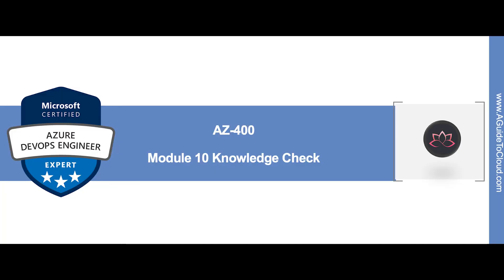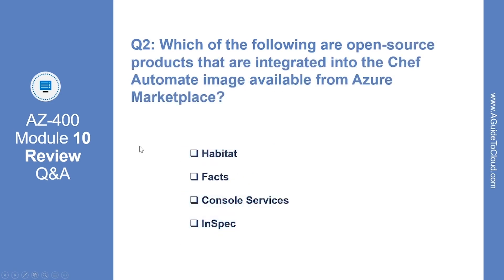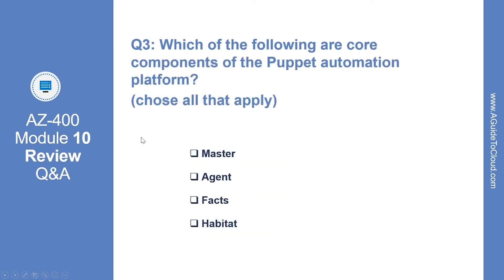This is the last section and the last module. In this section we are going to go through Module 10 review questions. Question 1: which of the following are main architectural components of Chef? The correct answers are Chef server, Chef client, and Chef workstation. Question 2: which of the following are open source products integrated into Chef Automate image available from Azure Marketplace? The right answers are Habitat and Inspect. Question 3: which of the following are core components of the Puppet automation platform? The correct answers are Master, Agent, and Facts.